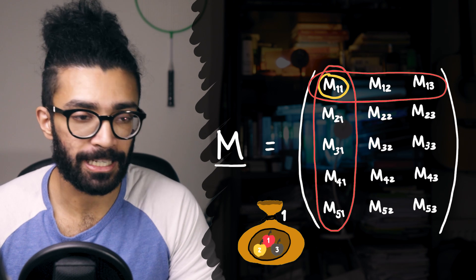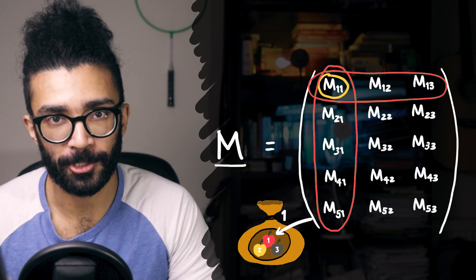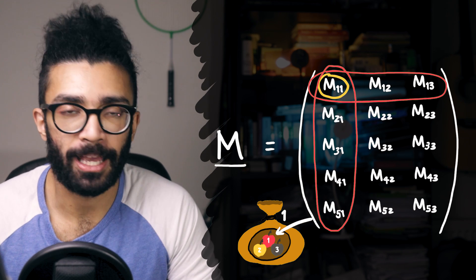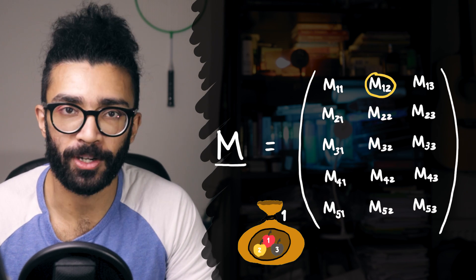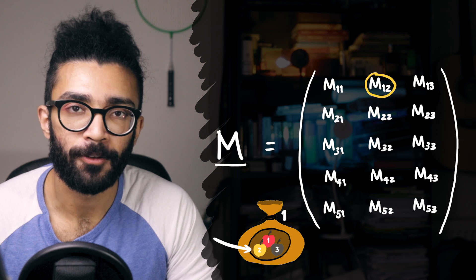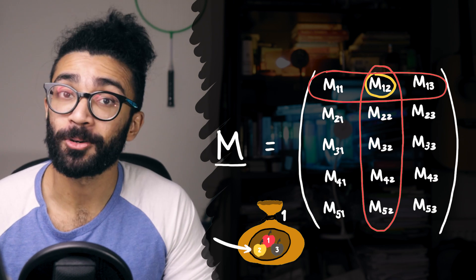Basically referring to the bag labeled number one and the apple labeled number one in that bag. We could also look at element M one, two, which refers to the first bag, second apple, or first row, second column, and so on and so forth.